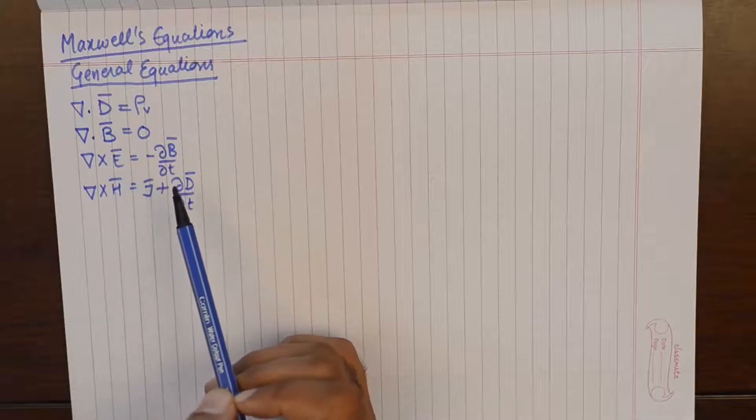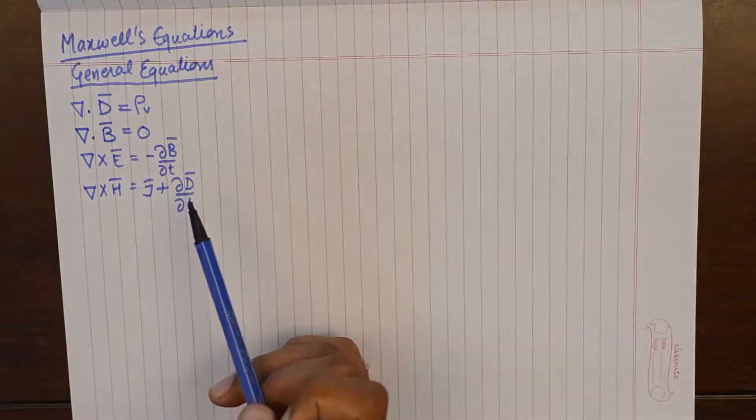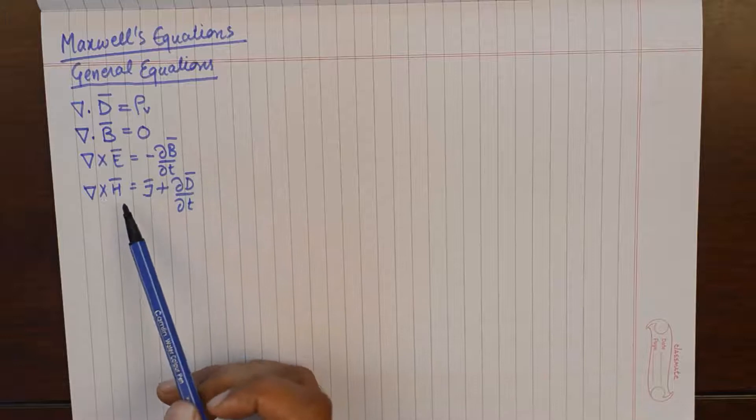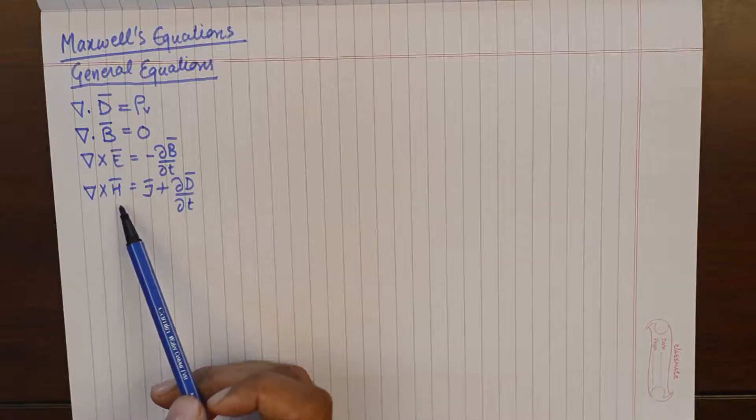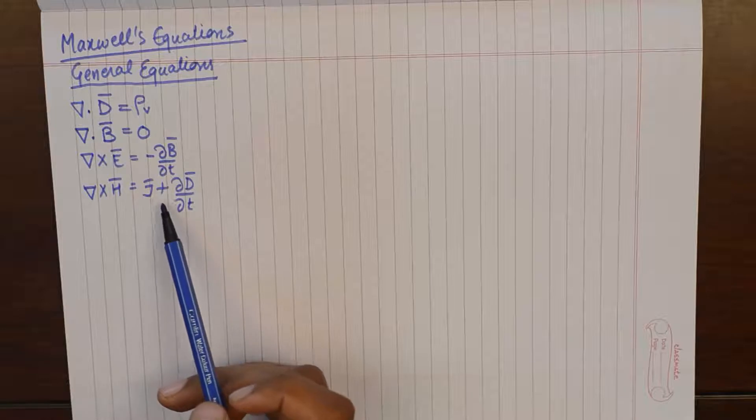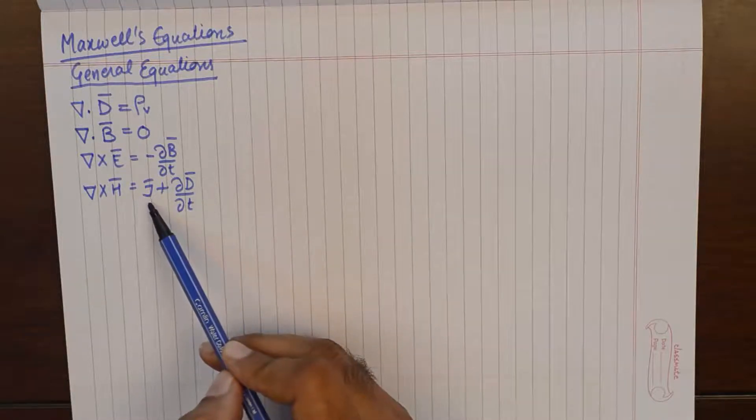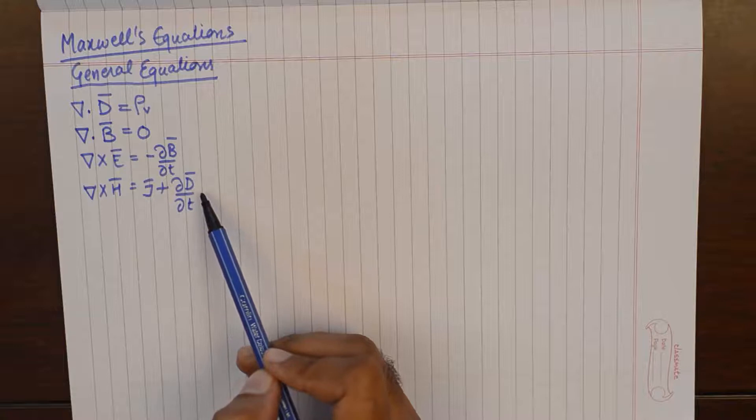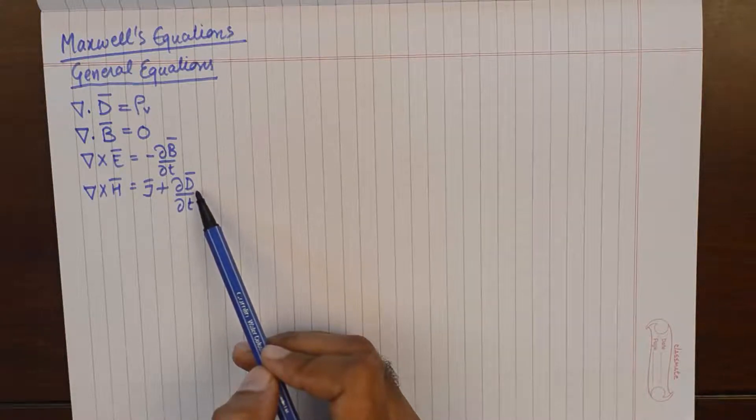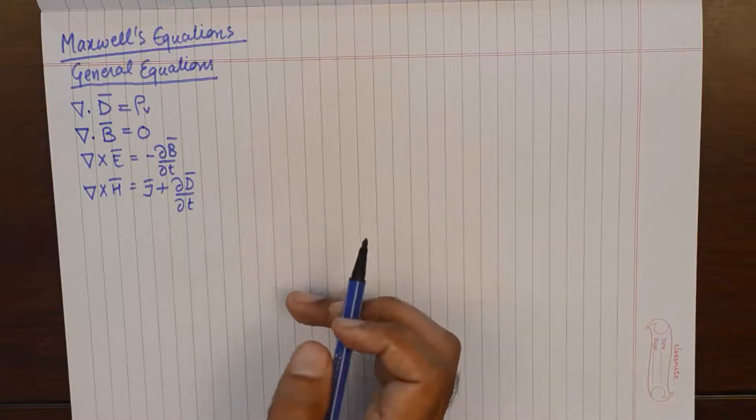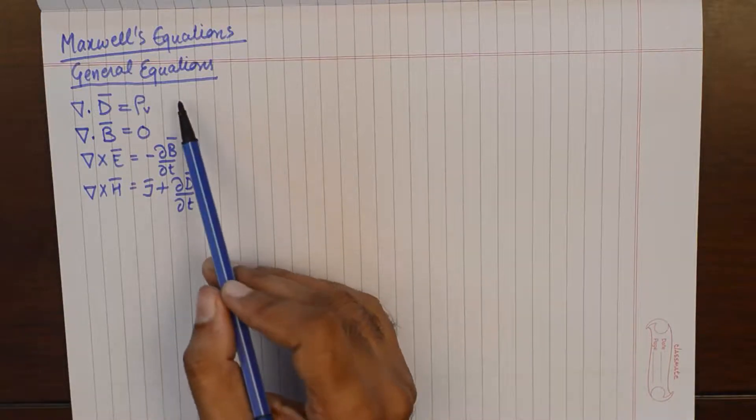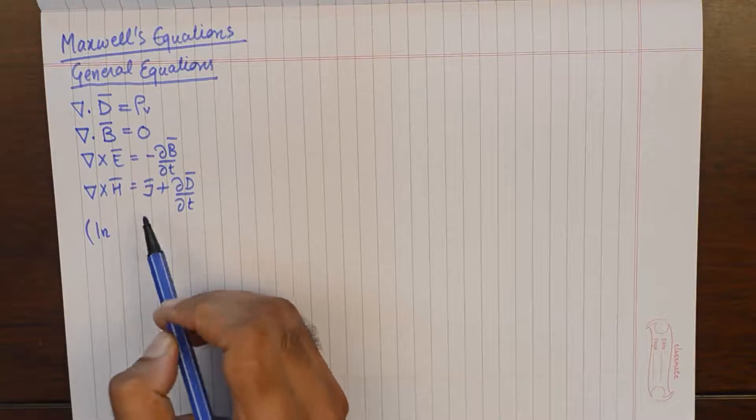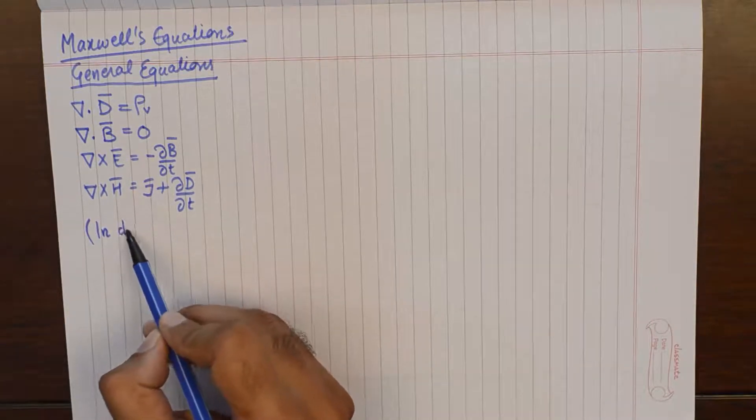Curl of electric field intensity is negative ∂B/∂t of magnetic flux density, and curl of magnetic field intensity is equivalent to current density J plus ∂D/∂t of electric flux density. These are Maxwell's generalized equations in differential form.